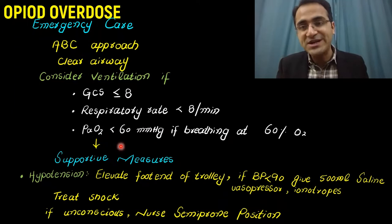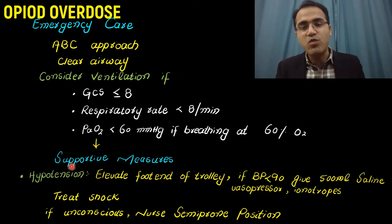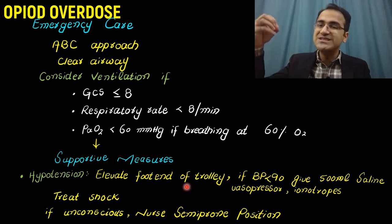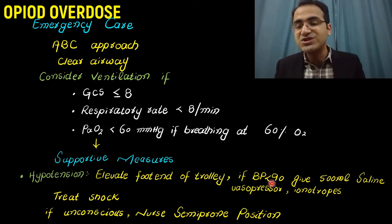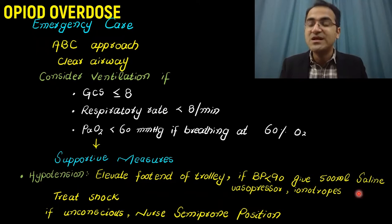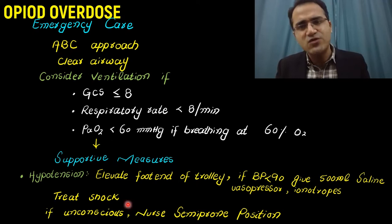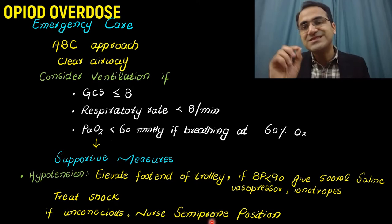Supportive care is needed for hypotension. Elevate the foot end of the trolley to increase venous return. If systolic blood pressure is less than 90 mmHg, give 500 ml of normal saline. If the patient is still not maintaining blood pressure, give vasopressors and inotropes to treat the shock.